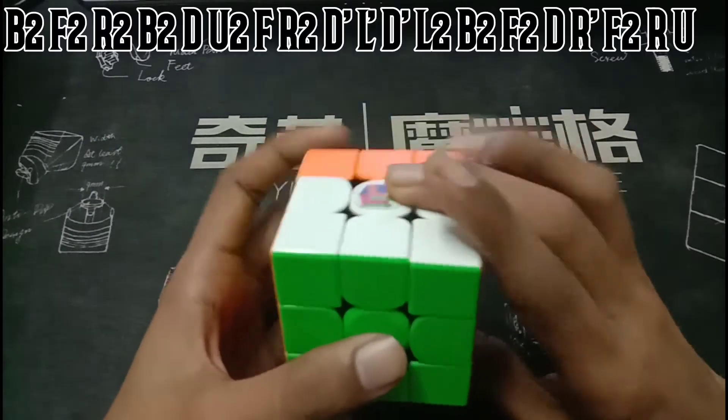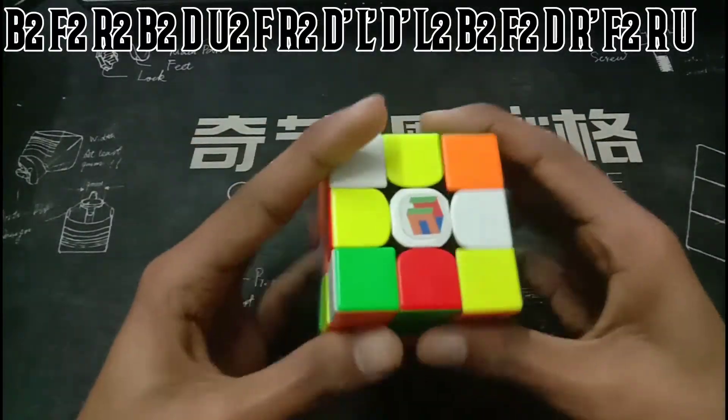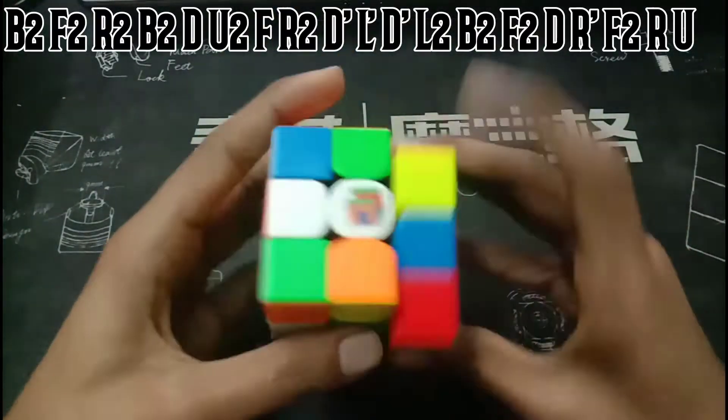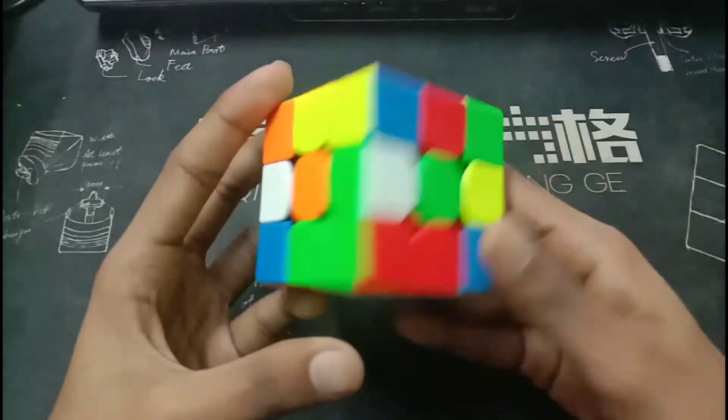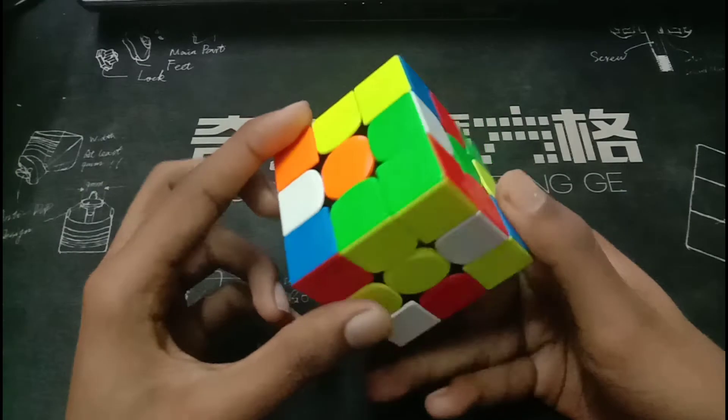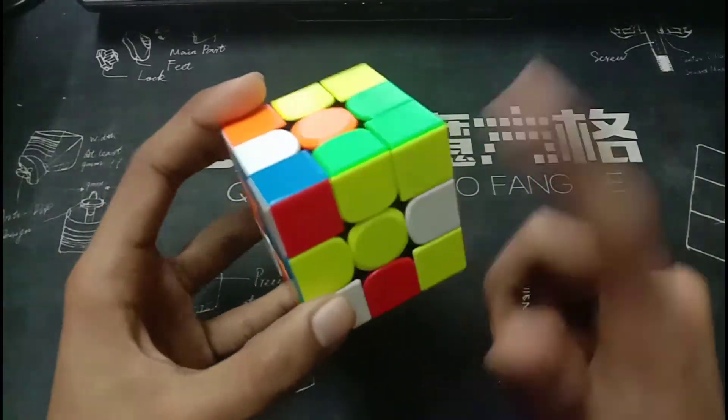Third solve, the scramble is on screen. So for this solve, Felix does yellow cross. And he plans a very efficient X cross for this solve, the pieces are here, here.